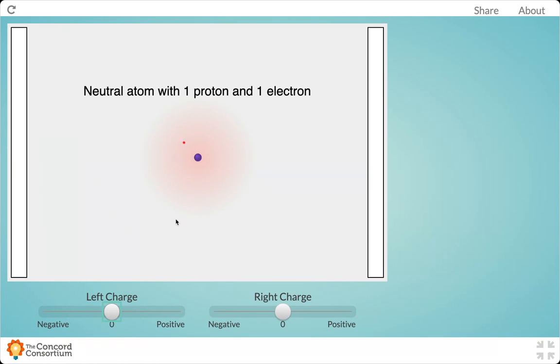Now here's what we're going to do with this simulation. We are going to charge these plates, making them either positively or negatively charged, to see what happens to the distribution of electrons in this electron cloud. Let's start on the left side. Let's make the left side heavily positively charged - let's max it out.